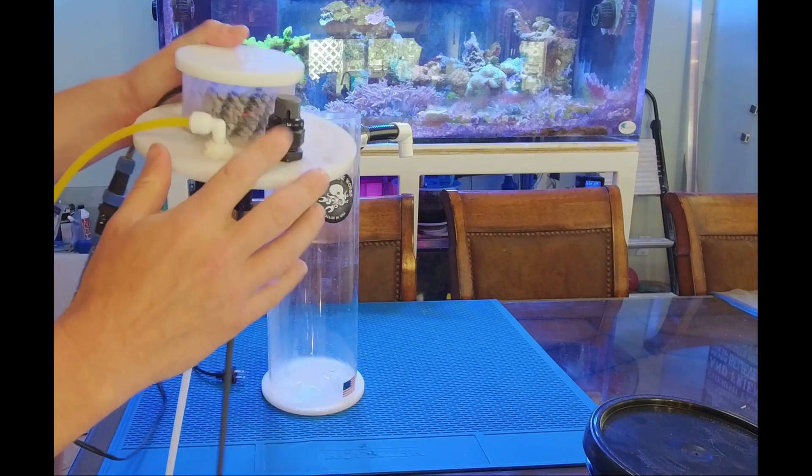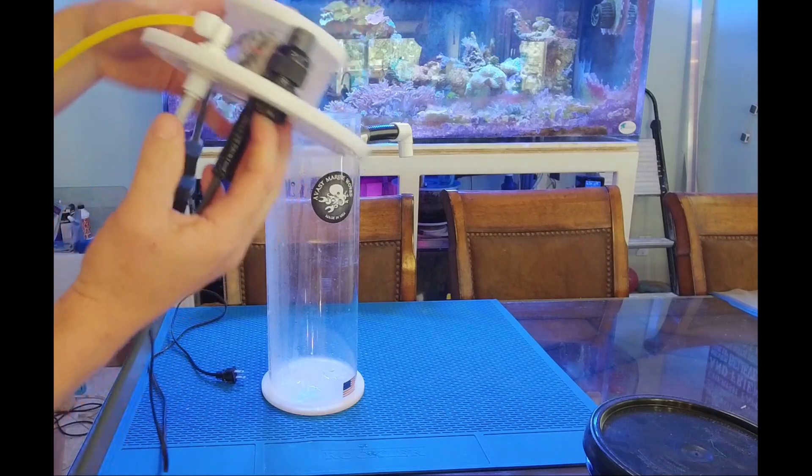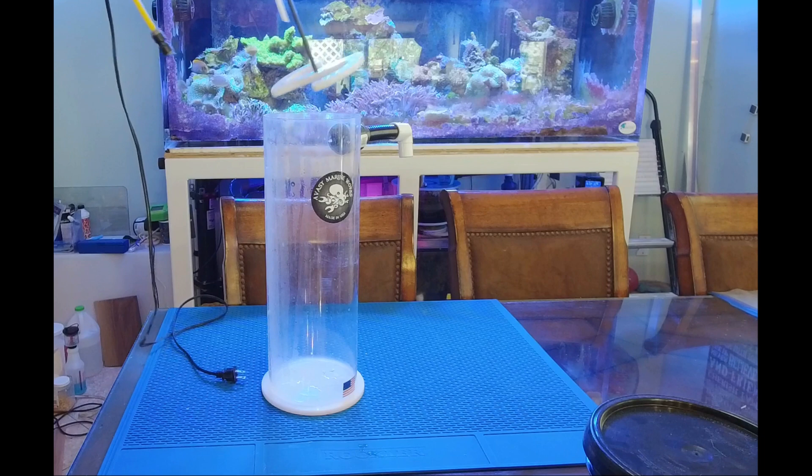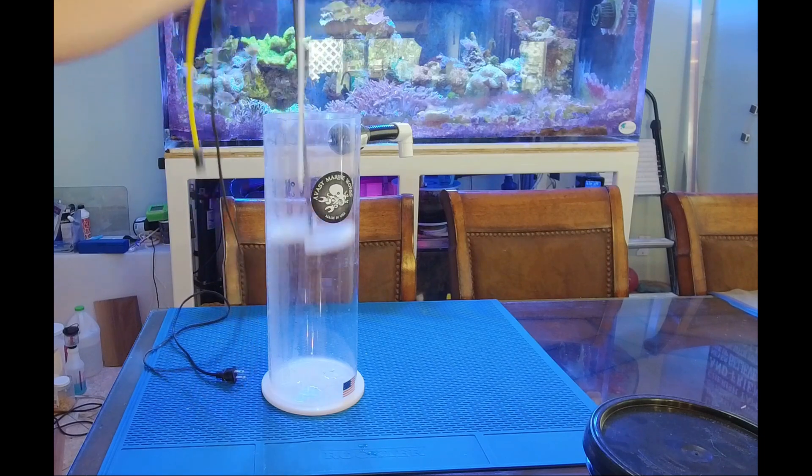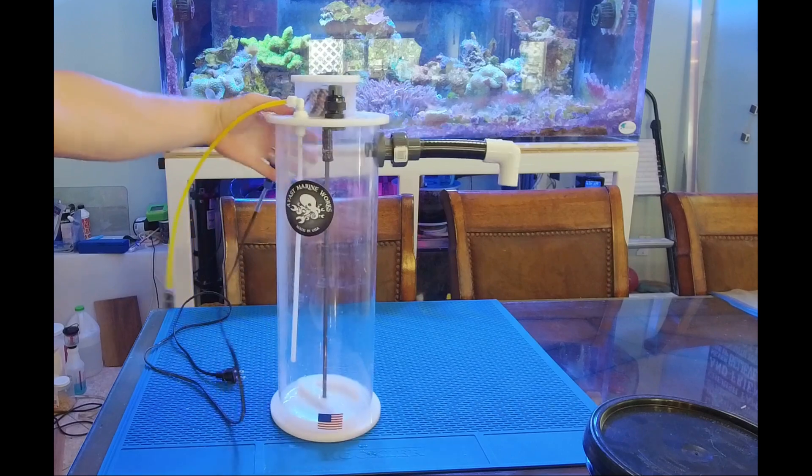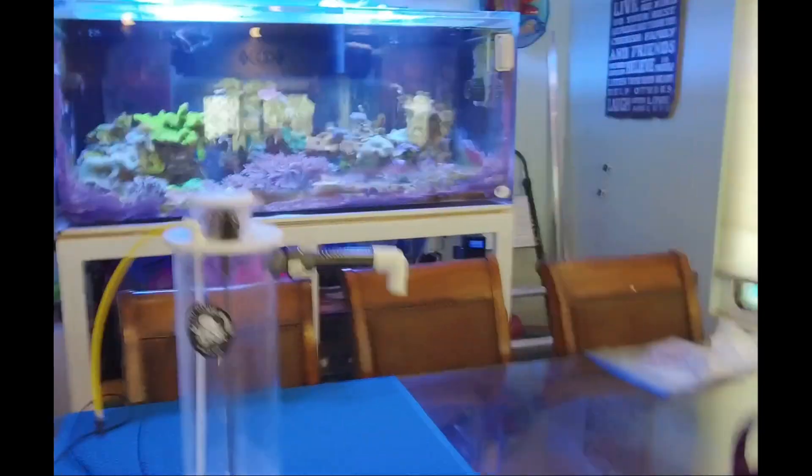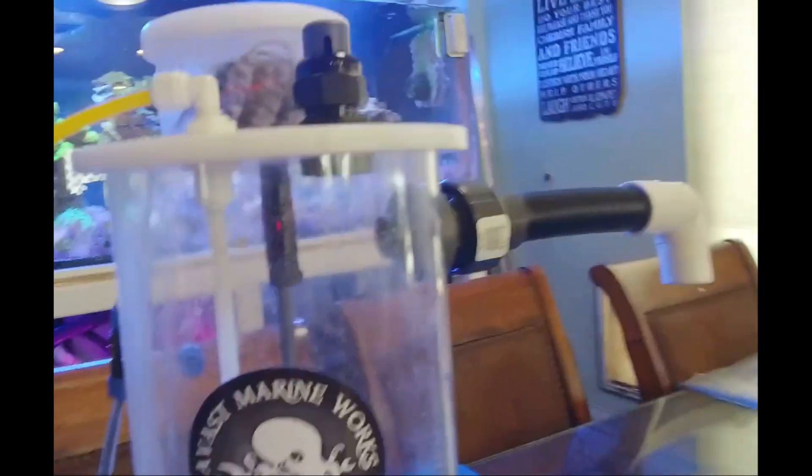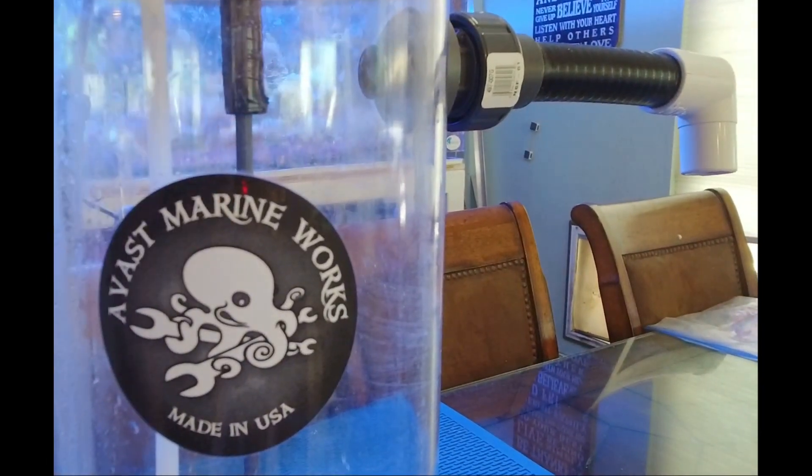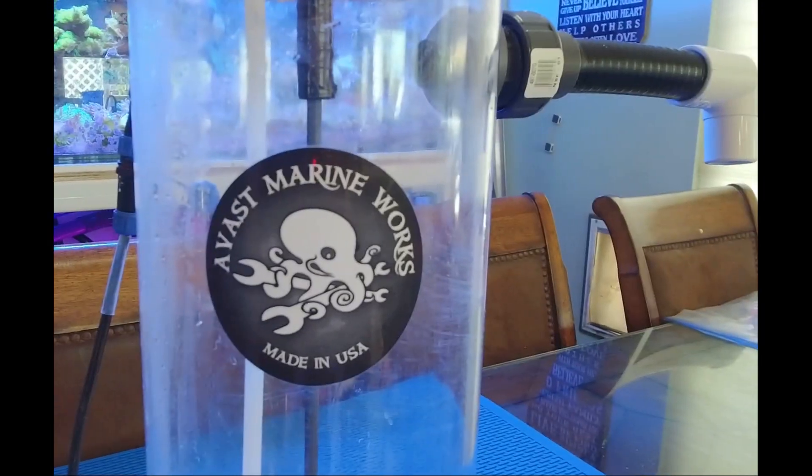And then here is a spot for a pH probe. So if you wanted to put a pH probe and monitor the calc level, that would be nice. I have not done that yet. Again, it is just a gravity design. Gravity is just overflowing in through there, and the stirrer just stirs up the calc as it goes along. And then the overflow into the tank is where it goes.